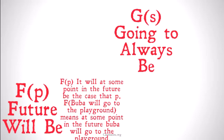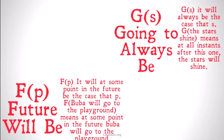G(s) is going to be going to always be. G(s) will be, it will always be the case that s. G, the stars shine, means that at all instants after this one, the stars will shine.